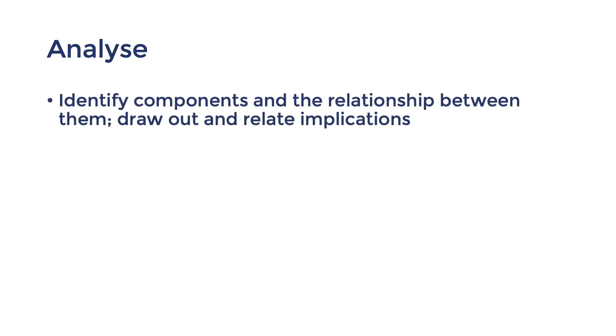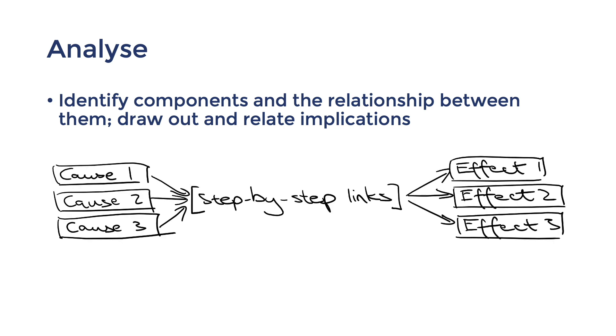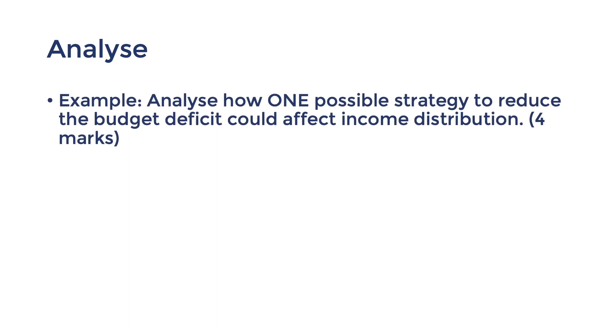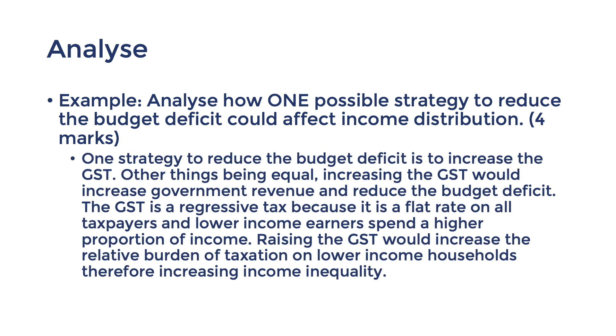Another verb that can be used in either short answers or extended responses is analyze. It's very similar to explain in that you must link cause and effect, but this time they're called components and implications, and analyze also allows for more complex links or relationships. If explain looks like a chain from cause and effect like this, analyze would look like a chain that has many beginnings, which are the causes and components, and many implications, which are the effects, and this may require multiple links. Let's look at a simple example. Analyze how one possible strategy to reduce the budget deficit could affect income distribution. And here's a sample answer that shows how it clears step-by-step link from GST to its implications on the budget deficit and income distribution. The link from GST to the budget deficit is government revenue, and this sample answer also makes a clear link to income distribution by explaining what a regressive tax is, and the specific impact on low-income households. As you can see, in its simplest form, you can treat it like an explain question with multiple links to cover.